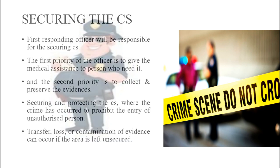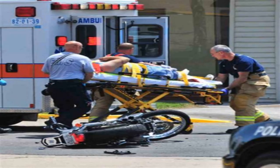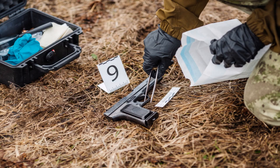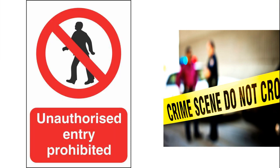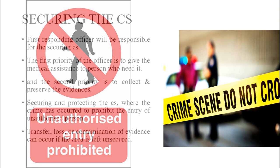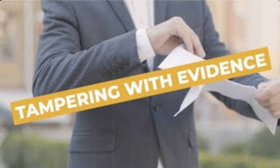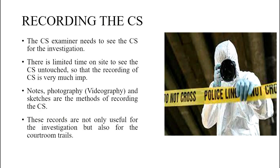The first officer or person who comes to the crime scene is called the first responding officer, and will be responsible for securing the crime scene. The first priority of this officer is to give medical assistance to persons who need it, and the second priority is to collect and preserve evidence. The scene of crime must be secured to prohibit entry of unauthorized persons, as leaving the area unsecured can lead to transfer, loss, or contamination of evidence.